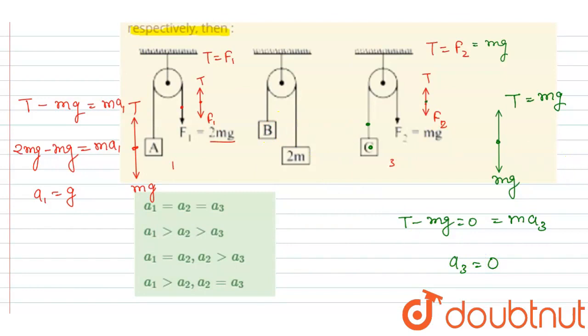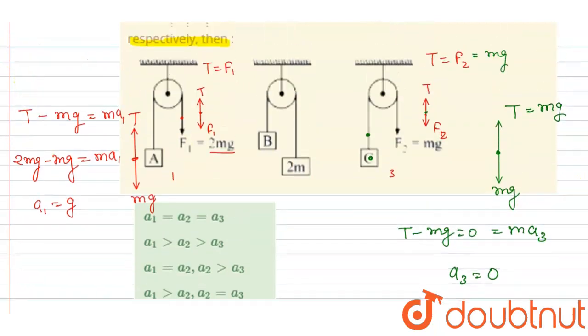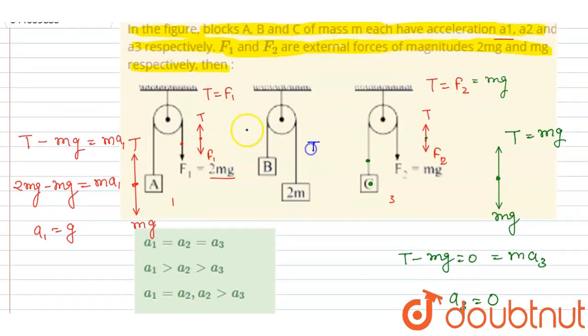Now for the second case, you have to write down the force equation on the two. If you see, let's say the tension is T and acceleration of both are a2 downward and a2 upward. Magnitude will be the same.